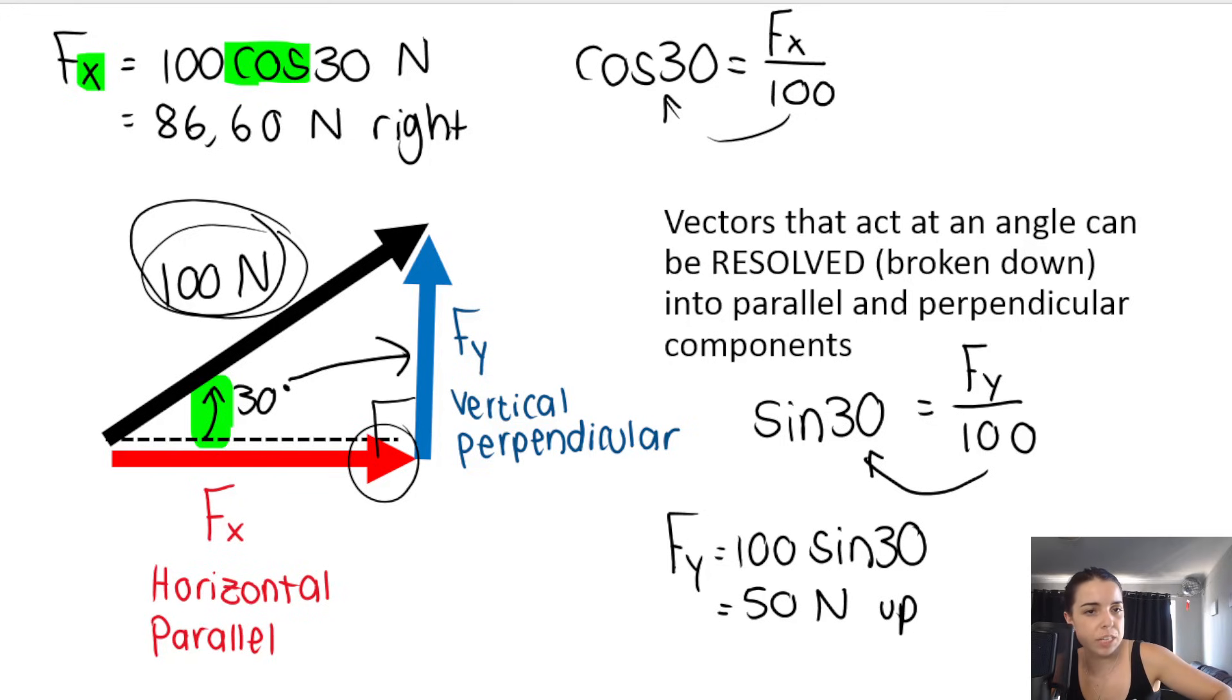So some teachers say, everybody, in order to work out the y component, you use sin. In this case, it works. So some teachers teach it like this. They say, when you work out the x component, this is what you do. To find the x component, you take the hypotenuse or the size of the vector. In this case, it's 100. You use cos, and then you put the angle, which in this case is θ.